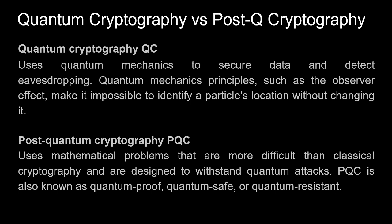Scientists are also working to fix that. Quantum cryptography and post-quantum cryptography are both methods for securing data, but they use different approaches. For example, quantum key distribution uses quantum infrastructure and communication, while Kyber or Dilithium are post-quantum cryptography schemes that can be implemented with current infrastructure but are still secure from quantum adversaries. Both may have a role in future secure communication. However, there are some risks associated with post-quantum cryptography, such as the need to replace existing algorithms with new ones that have longer key sizes and signature lengths.